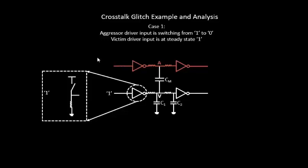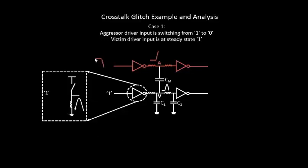Things will be a bit clearer when we switch from logic 1 to logic 0. In this scenario, the input to the inverter is logic 1, so the output is logic 0, and the output of this particular inverter will be discharged to logic 0 because of the on transistor over here.